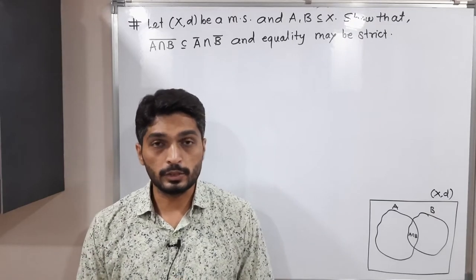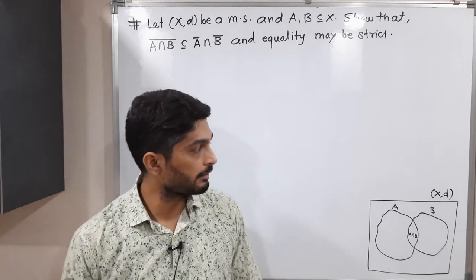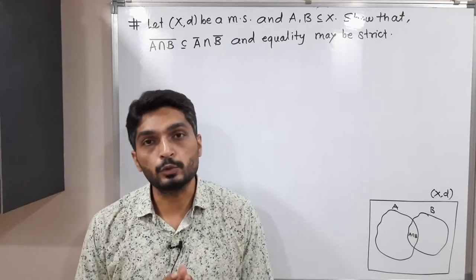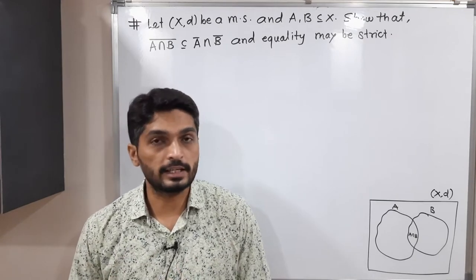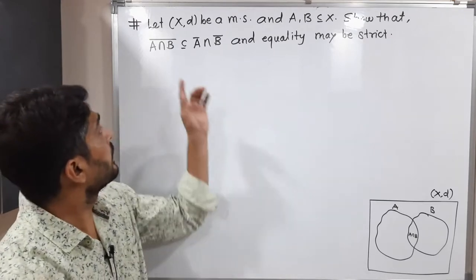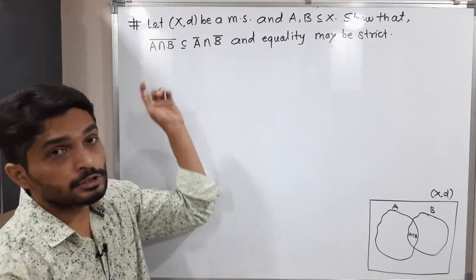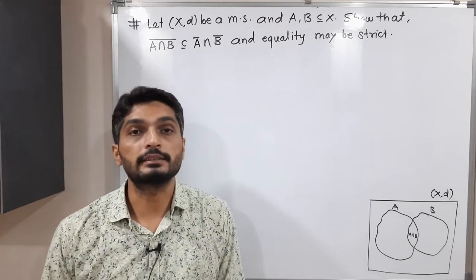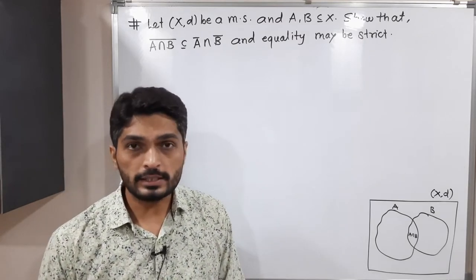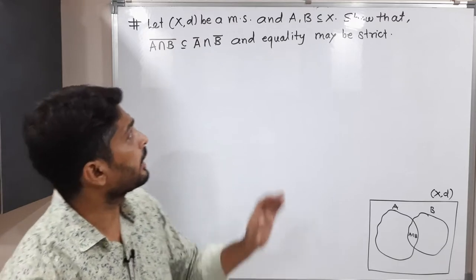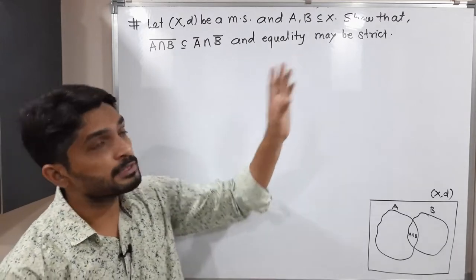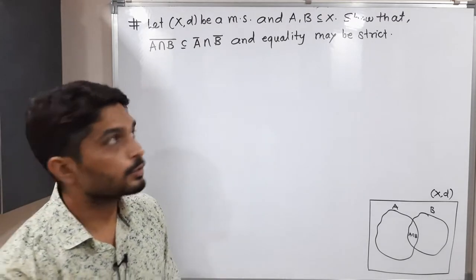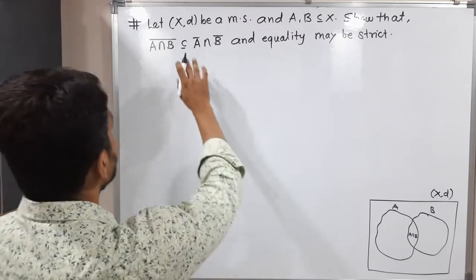Let us discuss this result. We have a metric space X with metric D, and A and B are any two subsets of X. We have to prove that the closure of A intersection B is a subset of the closure of A intersected with the closure of B. After that, we also have to prove that equality may be strict.